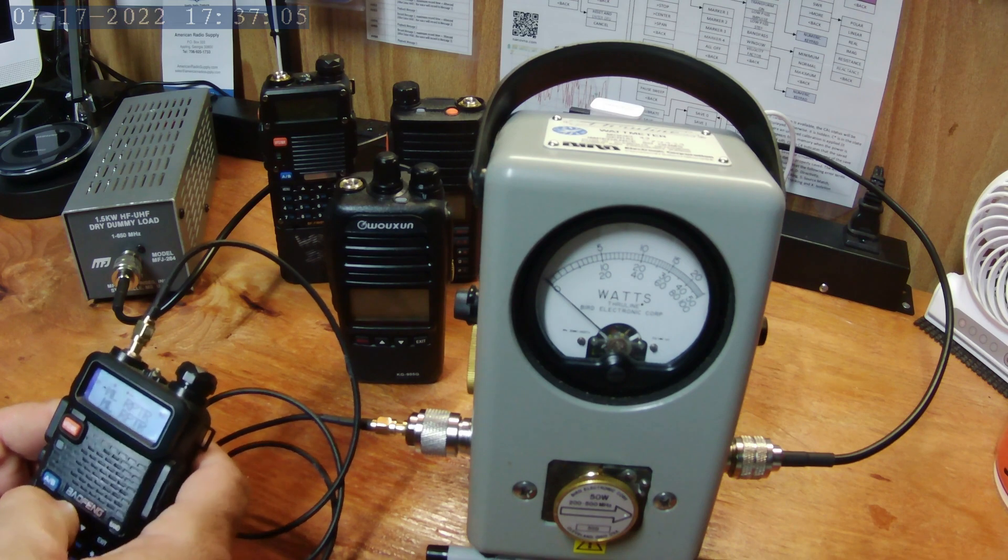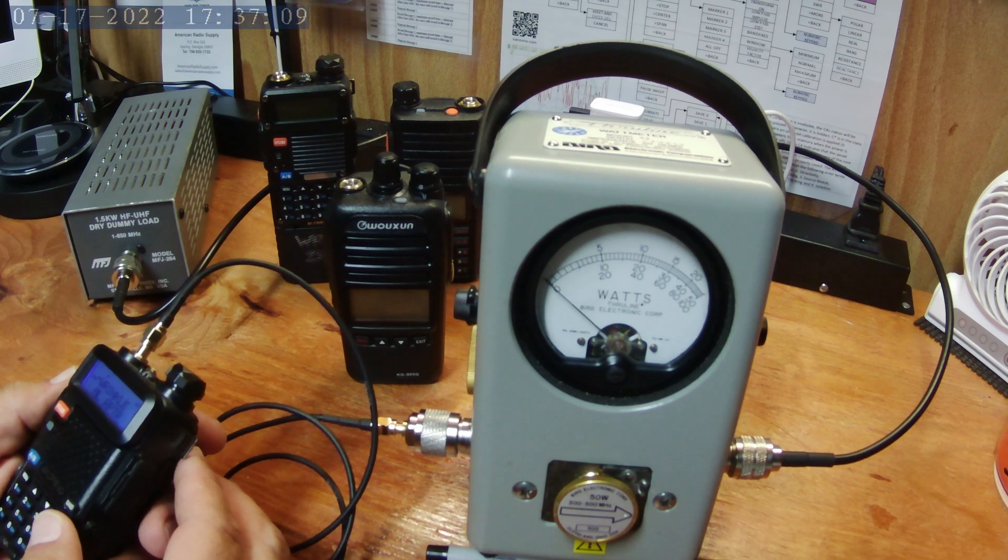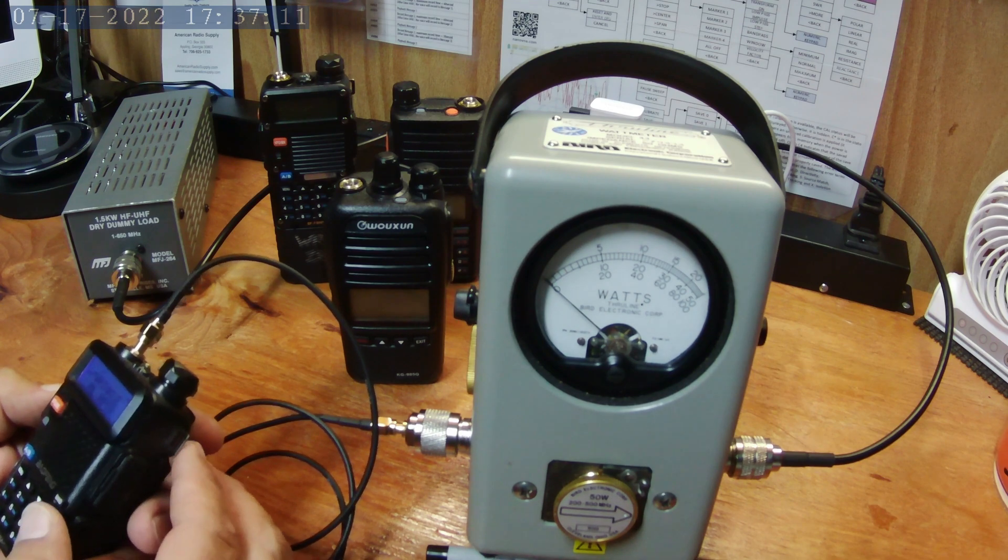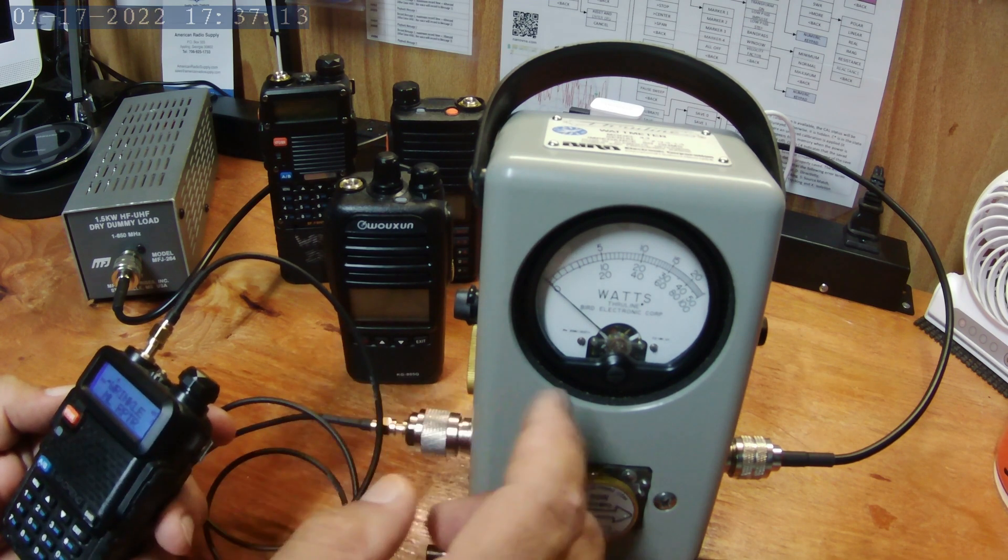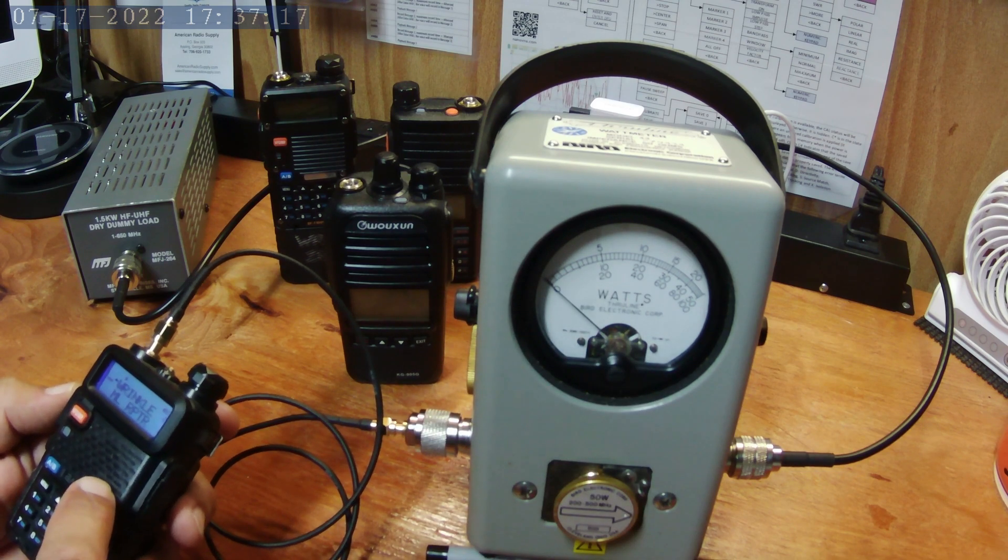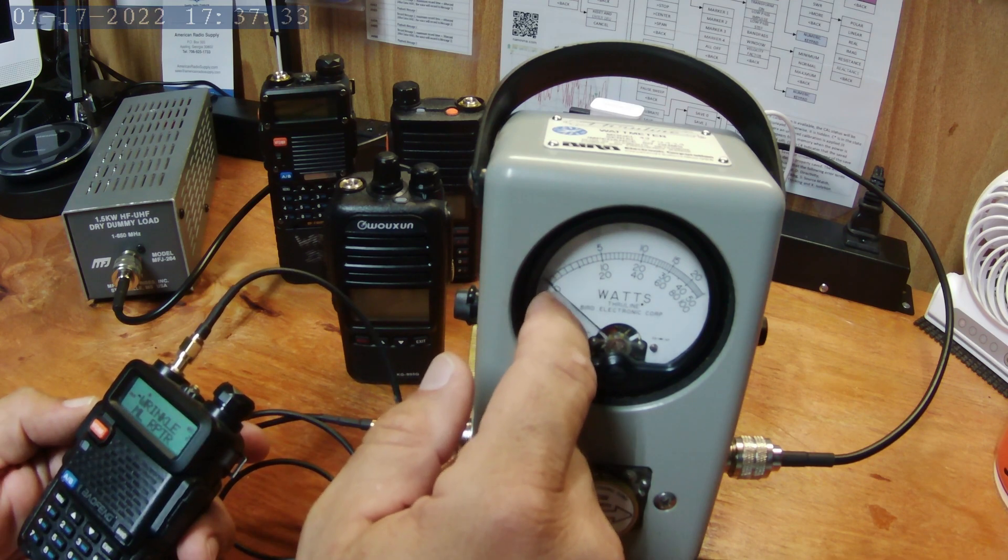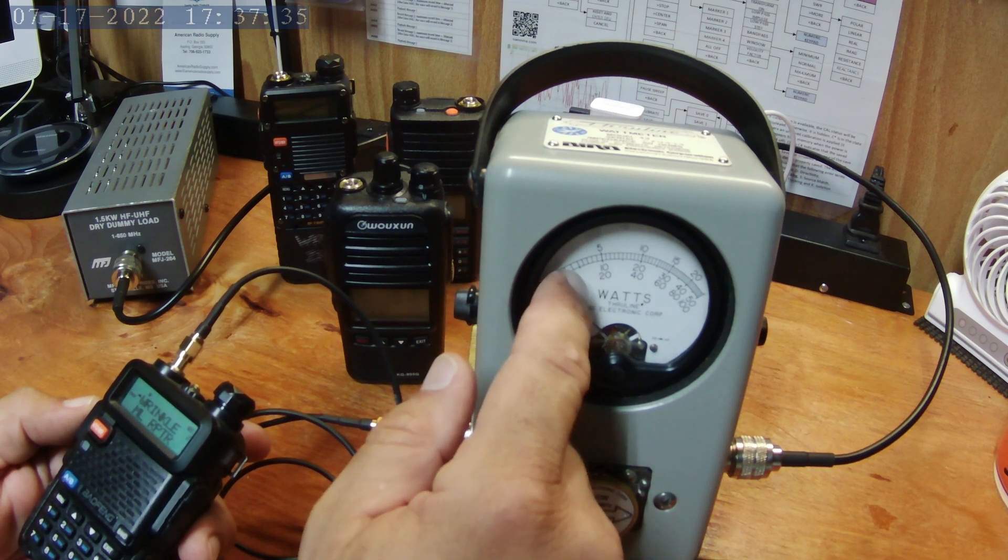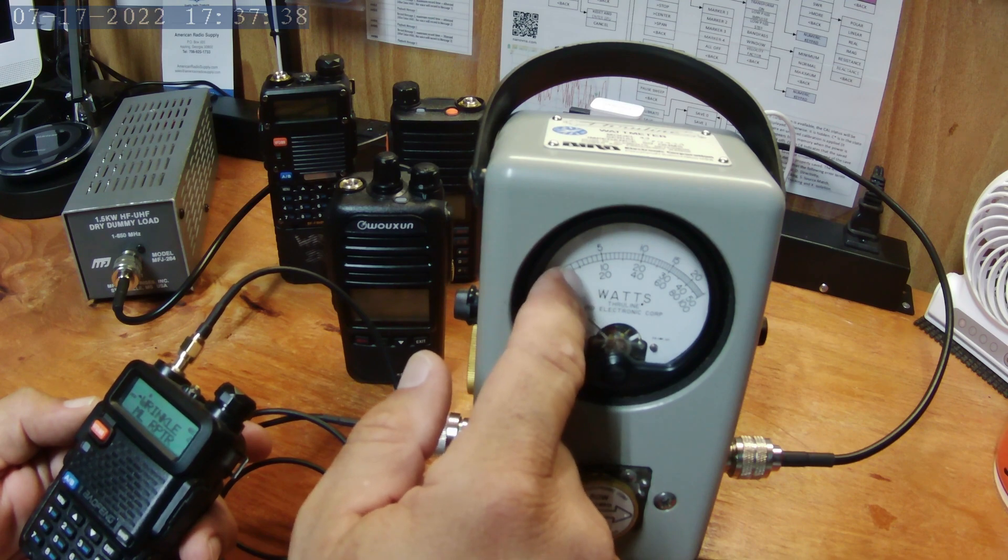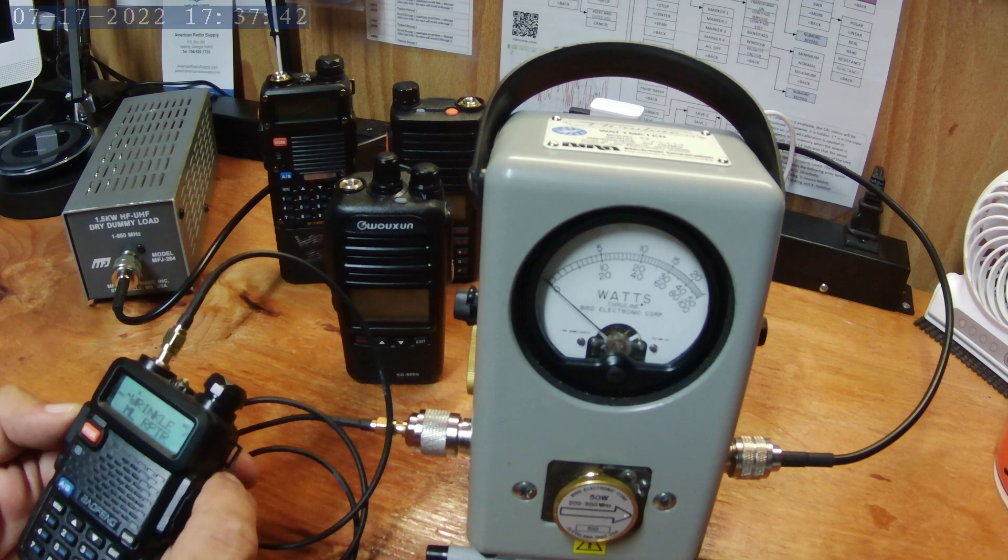We're going to turn this up and this is just going to be a simplex GMRS channel. The power is on high, you're going to be watching the middle set of numbers. This is a UV-5R advertised at 5 watts. 5 is going to be the hash mark right in the middle there, so let's go ahead and fire this one up.